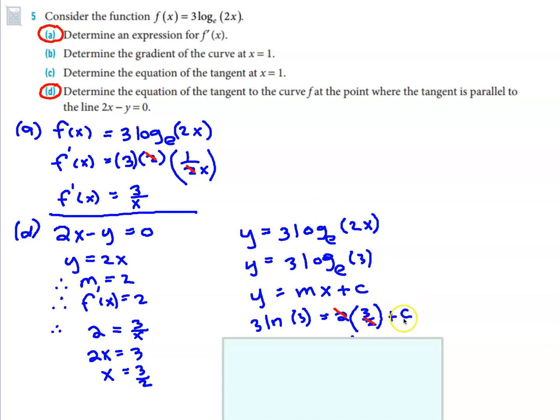And c is what we're trying to find. So the standard way of doing these questions is find the gradient, find x and y, sub it into that, solve for c. Okay, the 2's cross out.